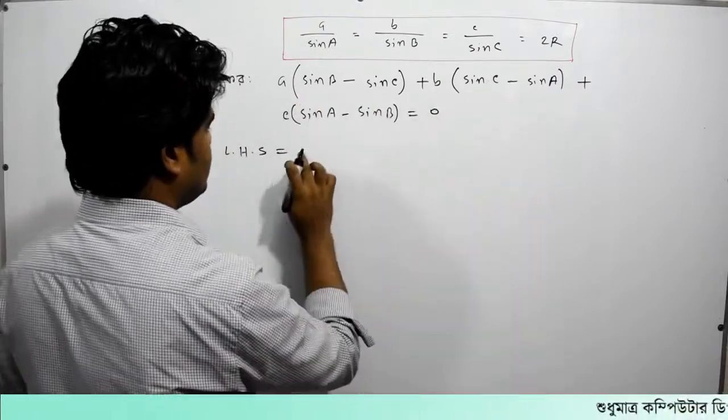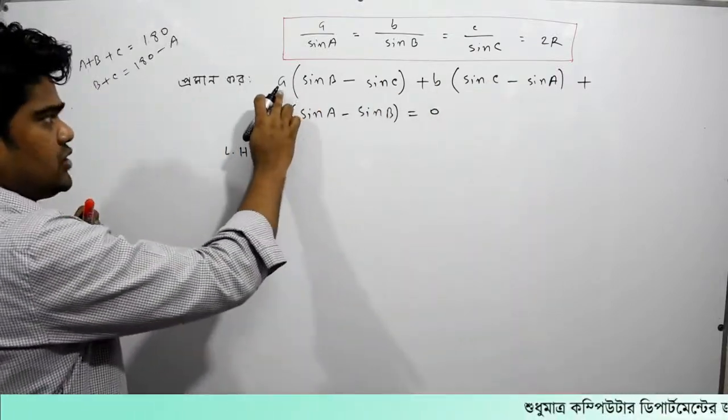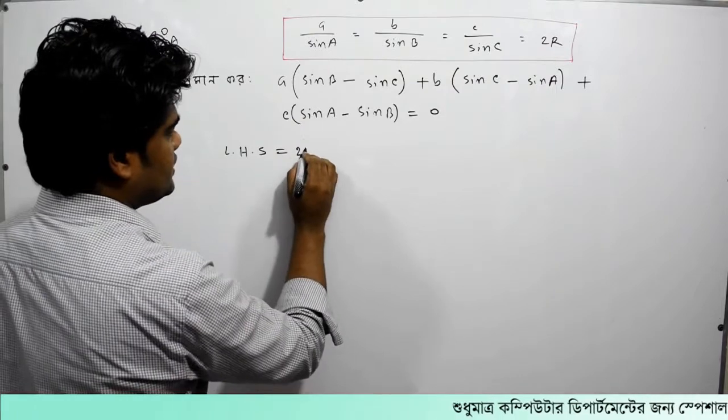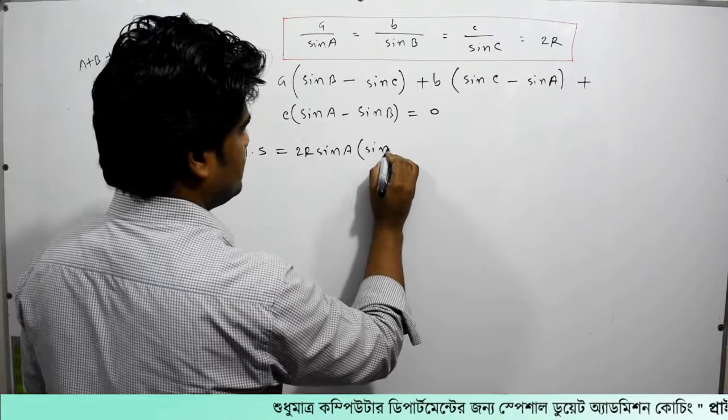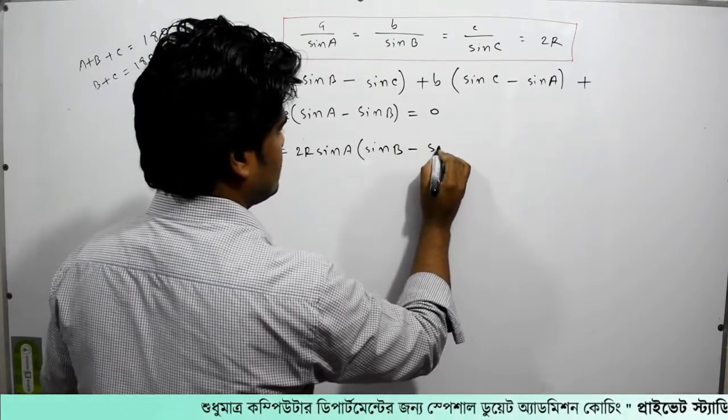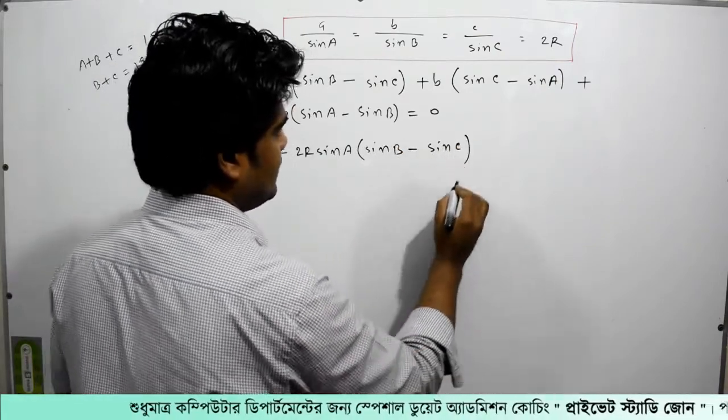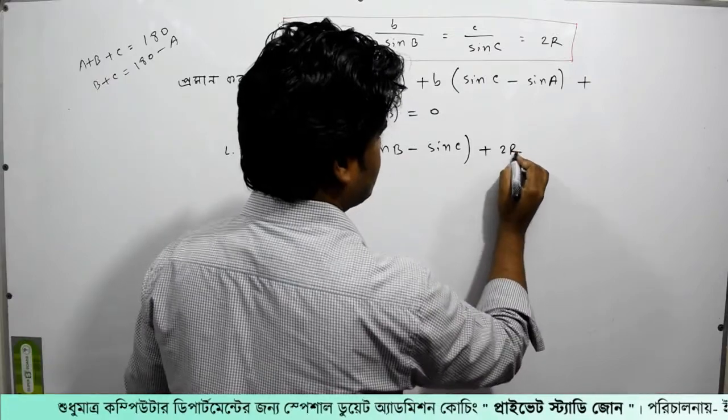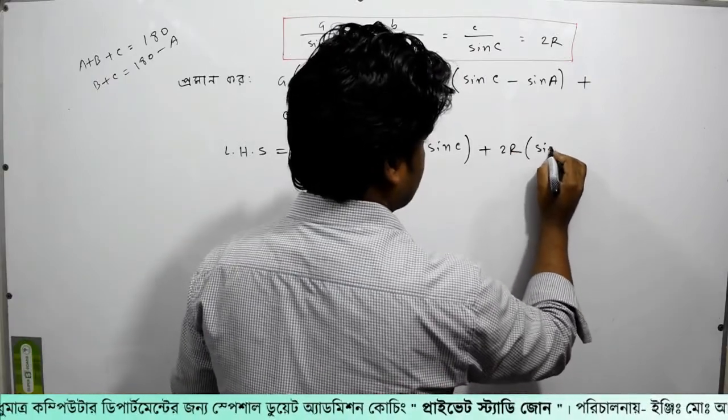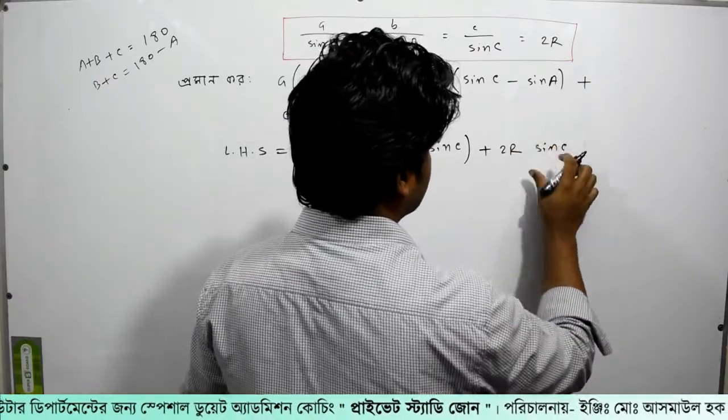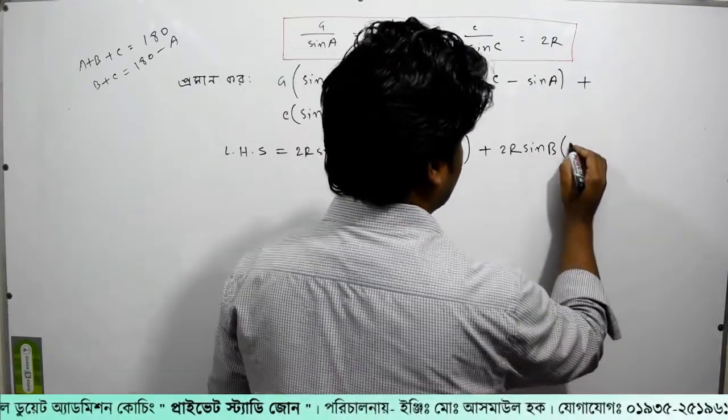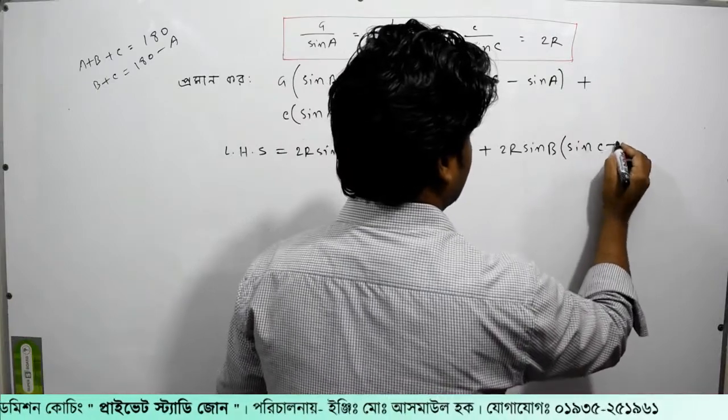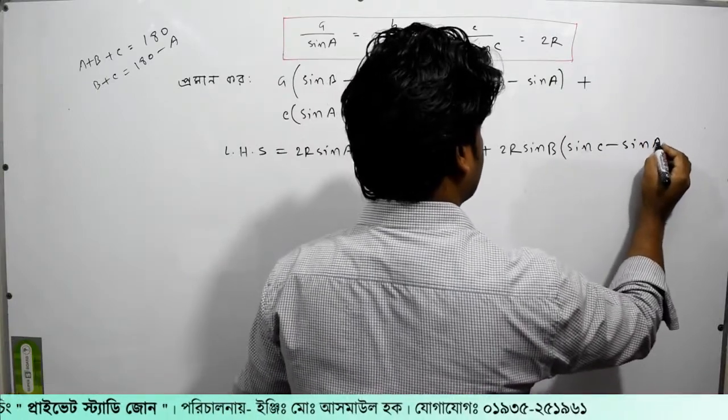A equal to 2R sin A, sin B minus sin C, plus B equal to 2R sin B, sin C minus sin A.